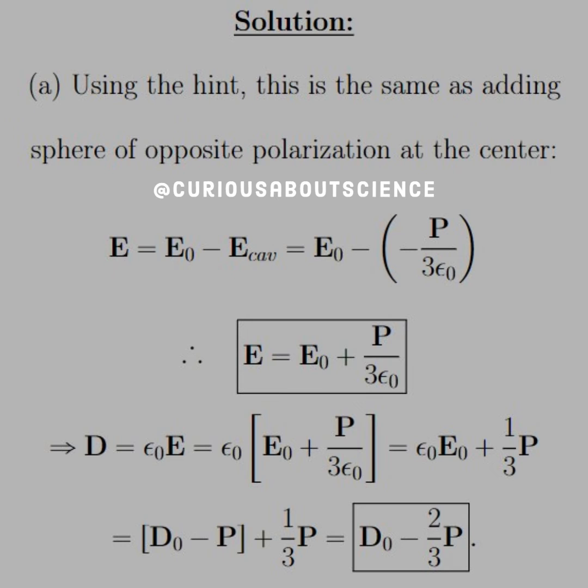Now, the electric displacement D is equal to epsilon naught times E. Remember that the polarization is constant, and adding the two cancels them out, which mimics what we're physically trying to do in excavating a cavity. So the polarization wouldn't be there since the material isn't there. The electric displacement is D equal epsilon naught E. We plug in the E that we just found and distribute the epsilon. The epsilon cancels in the polarization term, so we're left with epsilon naught E naught plus one-third P.